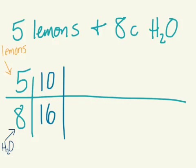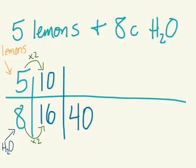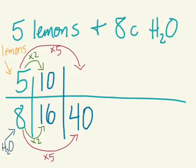Now let's say that she actually wants to use 40 cups of water. How many lemons does she need? Going from 16 to 40 isn't very friendly, but what about from 8 to 40? Whereas we multiplied both the top and bottom of our ratio table by 2 to get our first answer, we could go from 8 to 40 by multiplying by 5. So we could also multiply by 5 to figure out how many lemons. And 5 times 5 is 25, so if Emma wanted to use 40 cups of water, she would need 25 lemons.